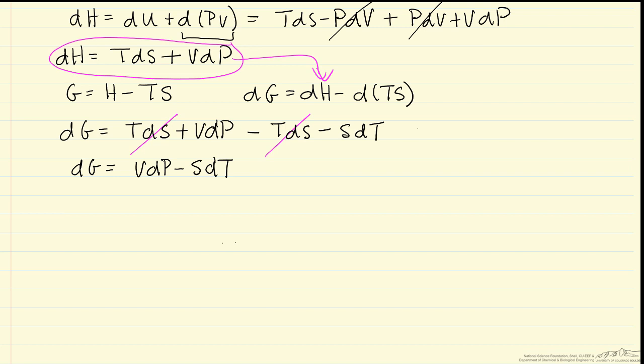So if we imagine we were to start with a liquid and vapor in equilibrium and vaporize some more of the liquid, this equation says that if I vaporize at constant pressure or constant temperature, DG must be zero because there's no pressure change and no temperature change.